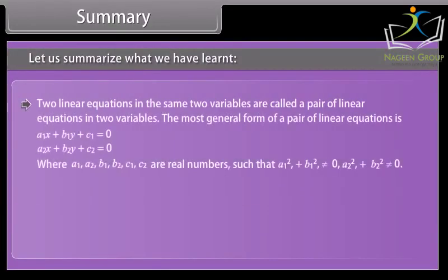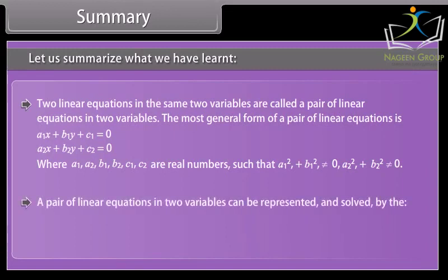Summary: Two linear equations in the same two variables are called a pair of linear equations in two variables. The most general form is a1x + b1y + c1 = 0 and a2x + b2y + c2 = 0, where a1, a2, b1, b2, c1, c2 are real numbers such that a1² + b1² ≠ 0 and a2² + b2² ≠ 0. A pair of linear equations can be represented and solved by the graphical method and the algebraic method.